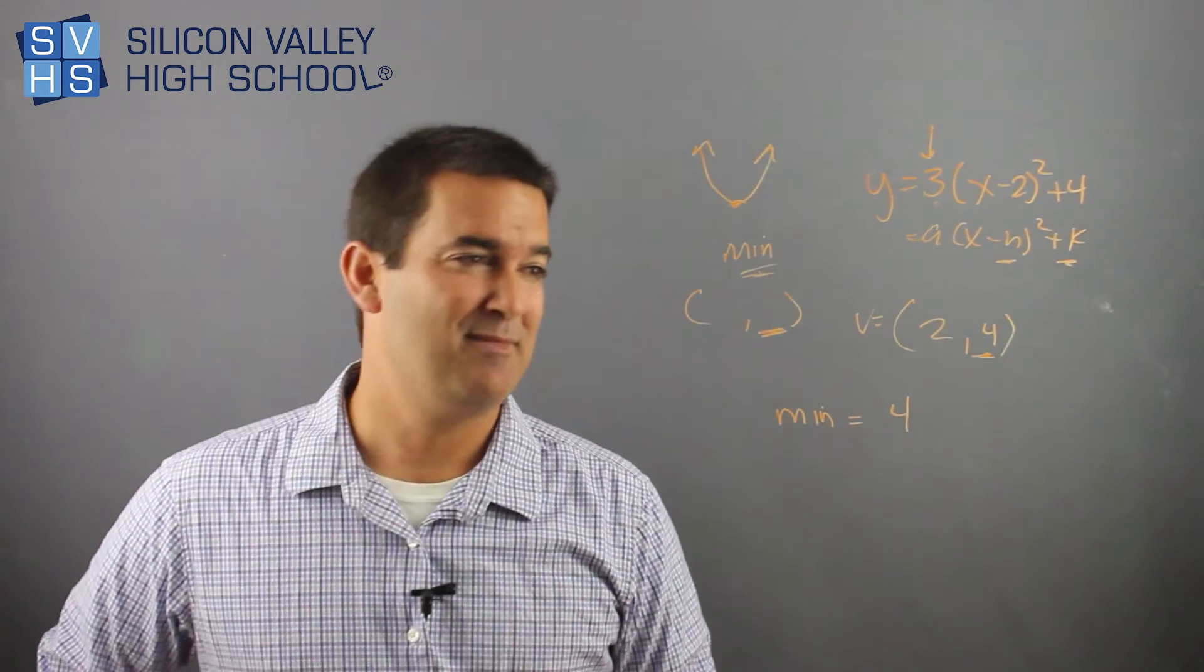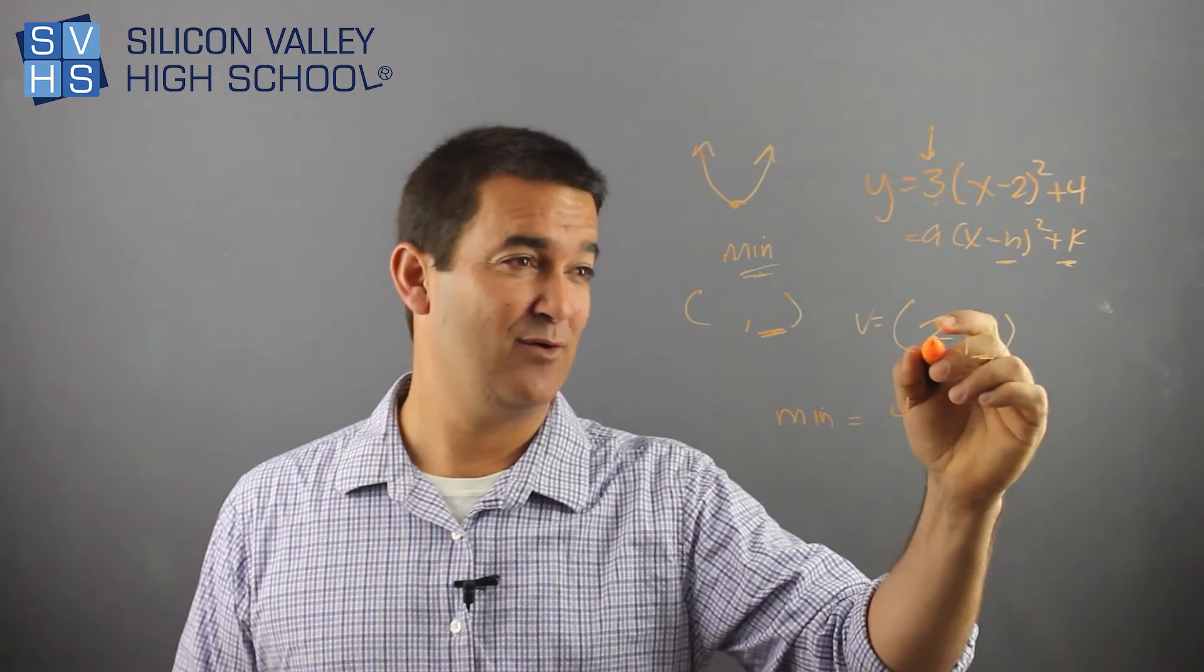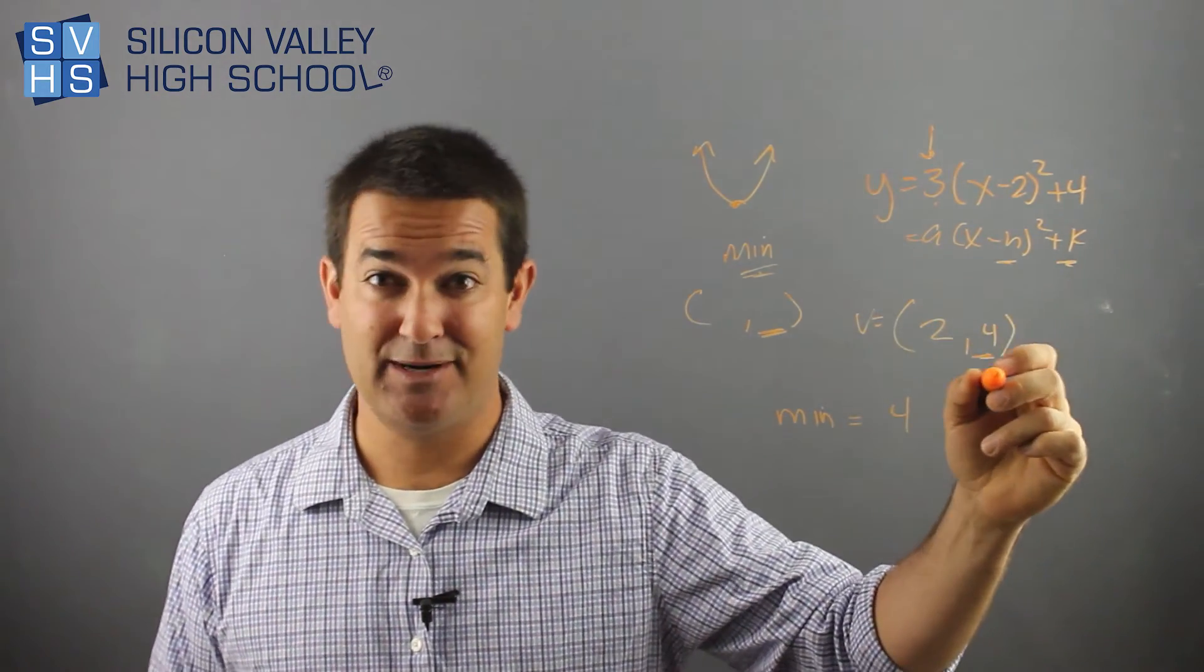Done. They might say, for what x value do you get your minimum? And then you say, well, at x is two, you get your minimum of y is four.